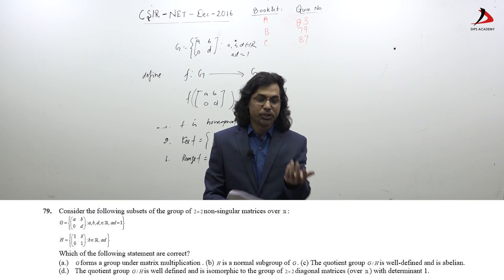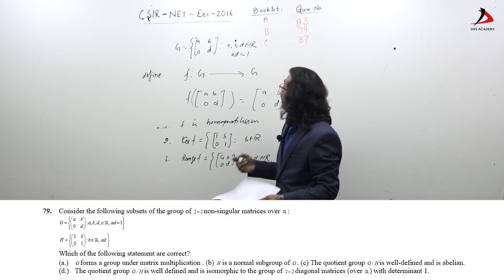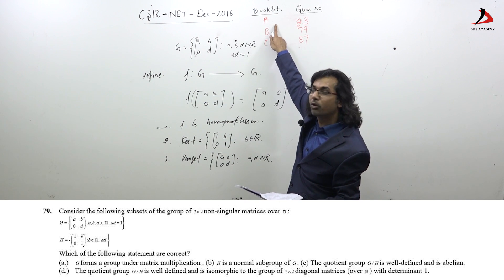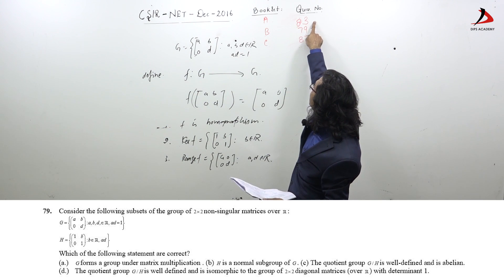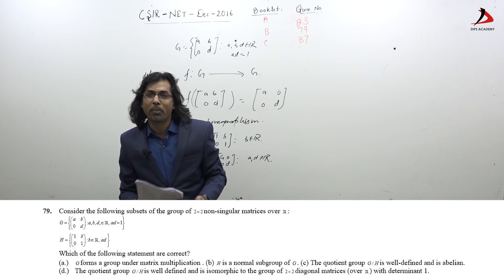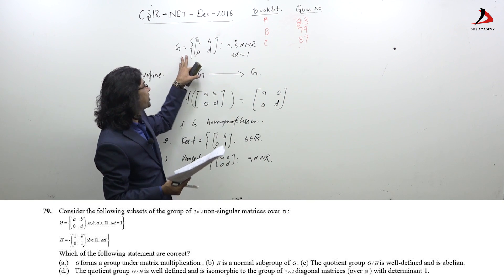Now we are going to start solving solutions for group theory algebra. I have booklet B on which it is question 79. If you have any other booklet, say in A it is question 83 and C it is question 87. The question is based on properties of a group or its quotient group.